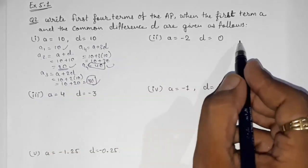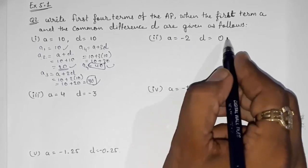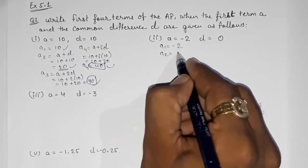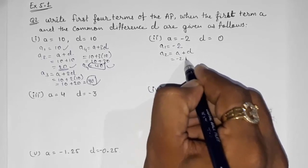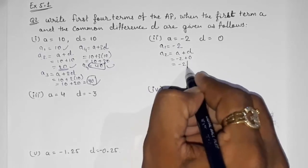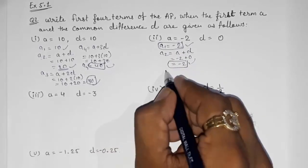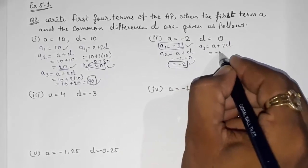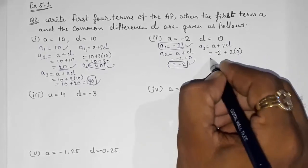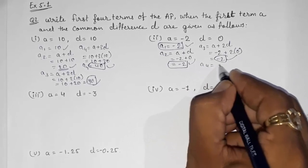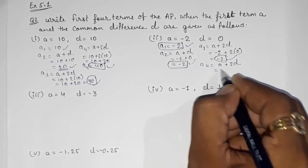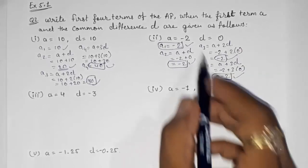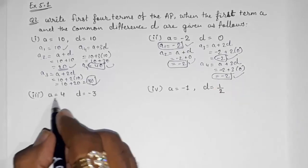Similarly for the next part, but here the difference d = 0, so whatever you multiply the answer will be minus 2 only. So a1 = -2, a2 = a + d = -2 + 0 = -2, a3 = a + 2d = -2 + 2×0 = -2, and a4 = a + 3d = -2 + 3×0 = -2. All four terms are -2.